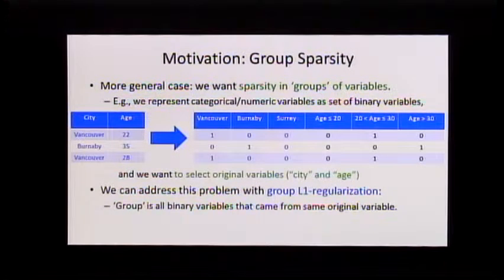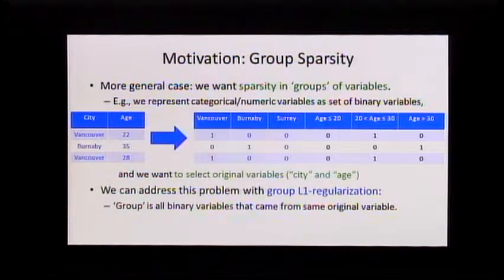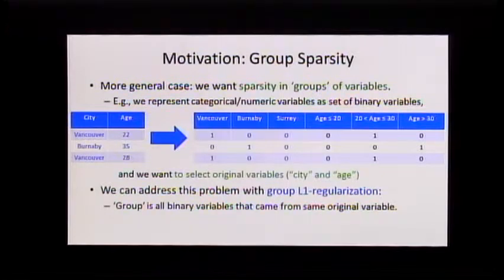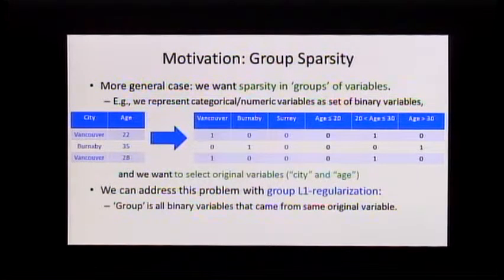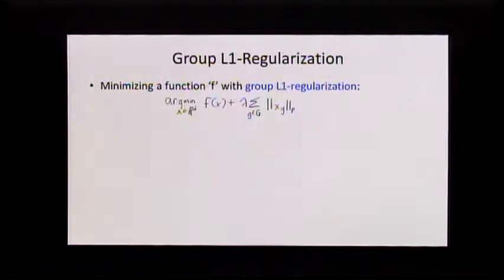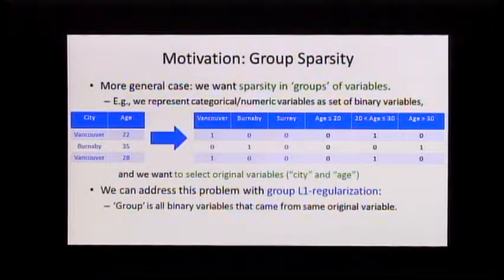We can address that problem with something called group L1 regularization. The group is going to be all the binary variables that came from the same original variable. In this case, we have two groups: the city group that comes from the city variable, and the age group that comes from the age variable.